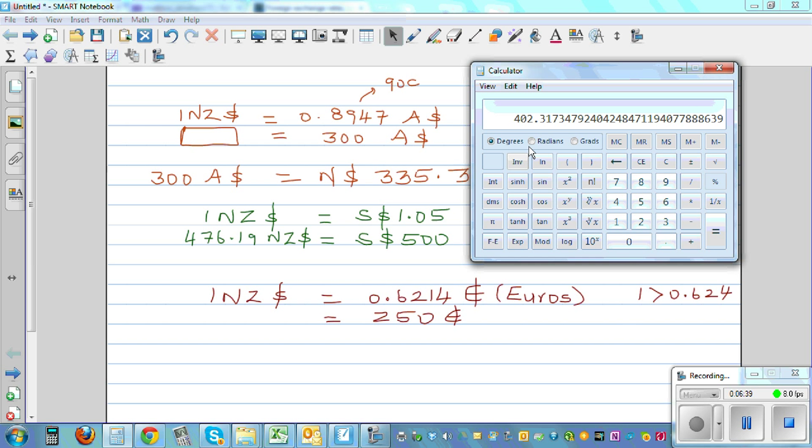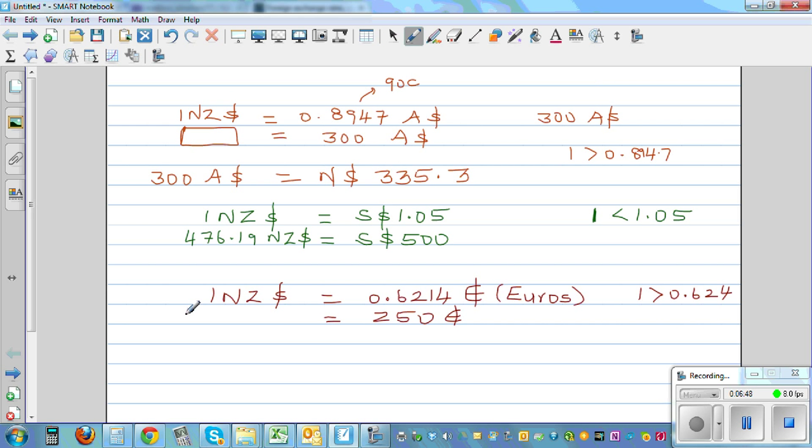402.32 New Zealand dollars. In 2 decimal places, 402.32. So the answer is 402.32 New Zealand dollars.